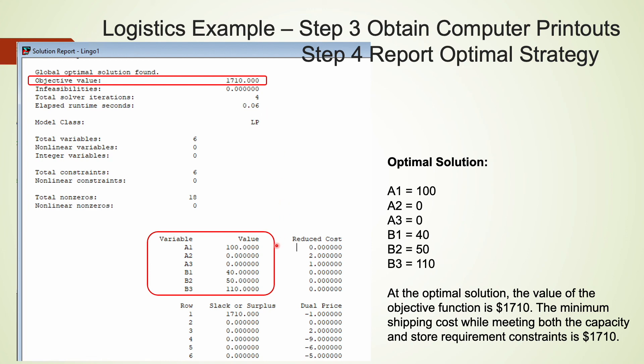The optimal solution for this problem is to ship 100 units from A to 1, 40 units from warehouse B to 1, 50 units from B to 2, and another 110 units from B to store 3. The manager is recommended not to ship any units from A to store 2, and again from A to store 3. This is actually not too surprising because the per-unit shipping costs from A to 2 and from A to 3 are much higher than the costs from B to 2 and B to 3.